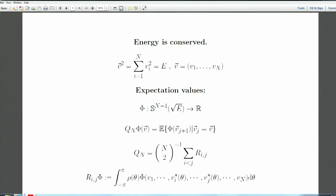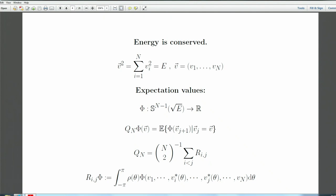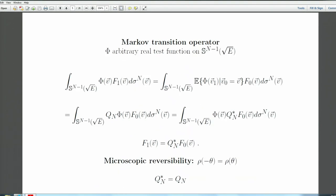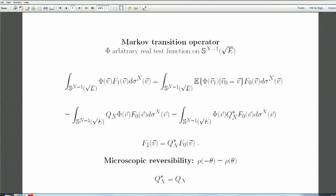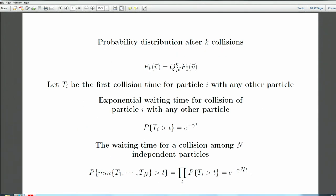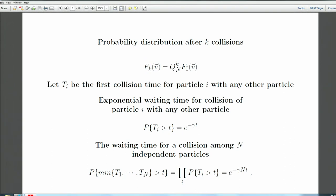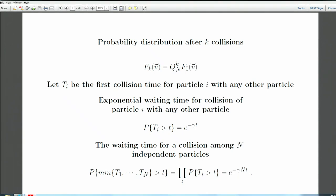Spherical harmonics of fixed degree can be very large spaces, so Q_n is not entirely trivial to analyze. Anyway, microscopic reversibility guarantees that Q_n is self-adjoint. The probability distribution after k collisions is obtained by starting with the initial distribution and applying Q_n* k times.